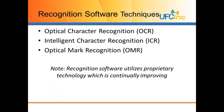Let's talk about the software that is used to recognize data on documents. There are three different types of software techniques that are commonly used in the data capture process. The first is optical character recognition, which is known as OCR. The second is intelligent character recognition, which is known as ICR. And the third is optical mark recognition, which is known as OMR. This recognition software utilizes proprietary technology that is continually getting better and improving.